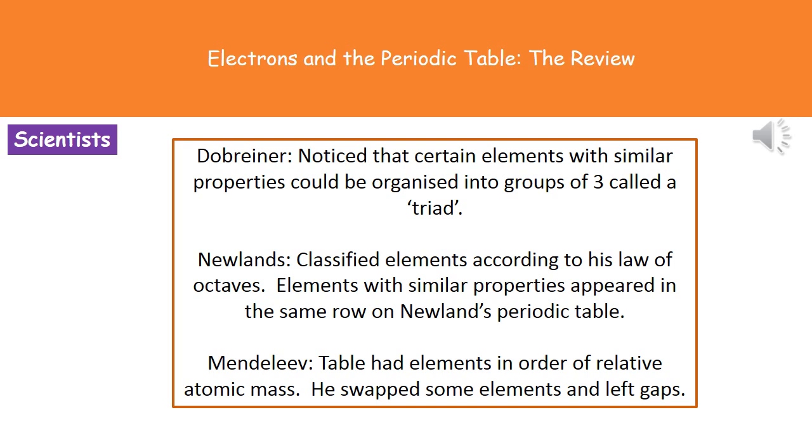Then we had a scientist called Newlands. And what he actually did was he classified elements according to his law of octaves. So what that actually meant was that elements with similar properties appeared in the same row on his periodic table.